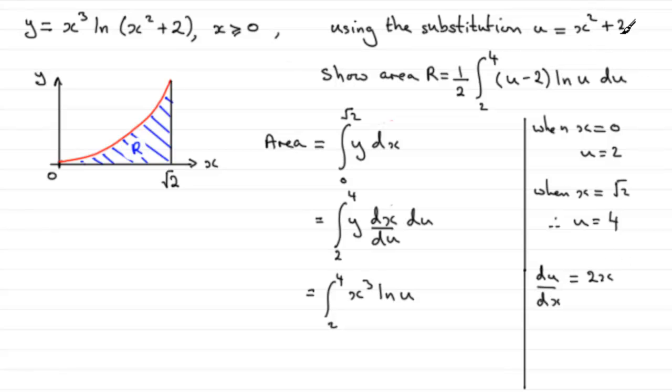If we differentiate the X squared, 2 obviously goes to 0. But we want DX DU, so we can reciprocate this. So we've got DX by DU equals 1 over 2X.